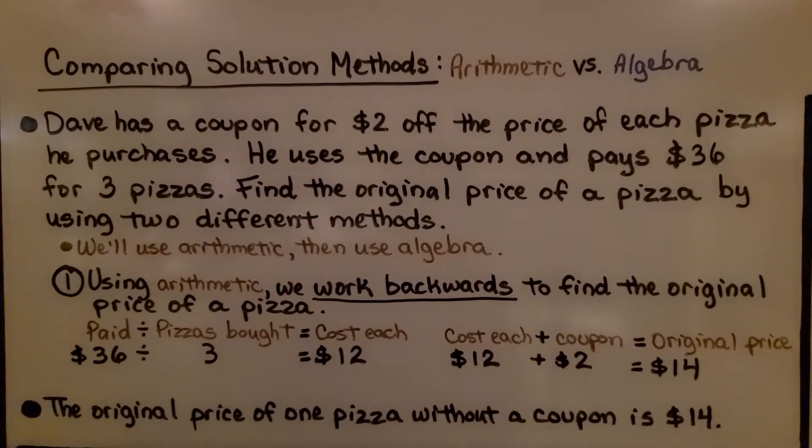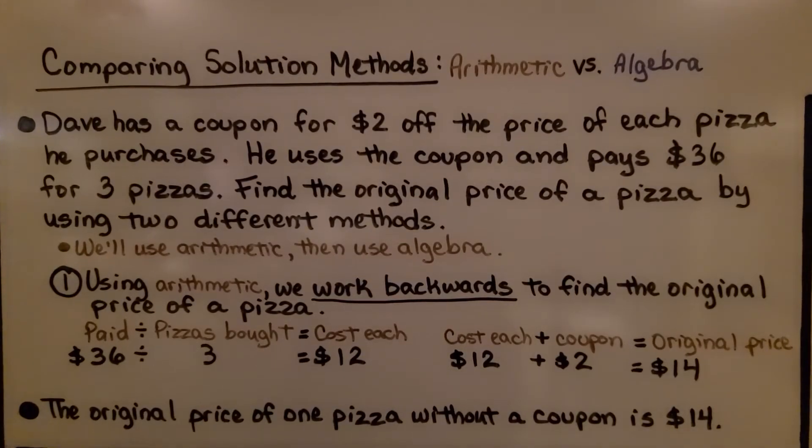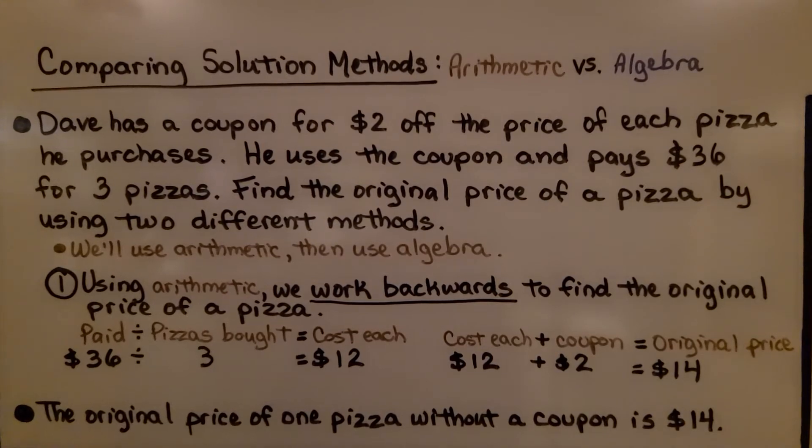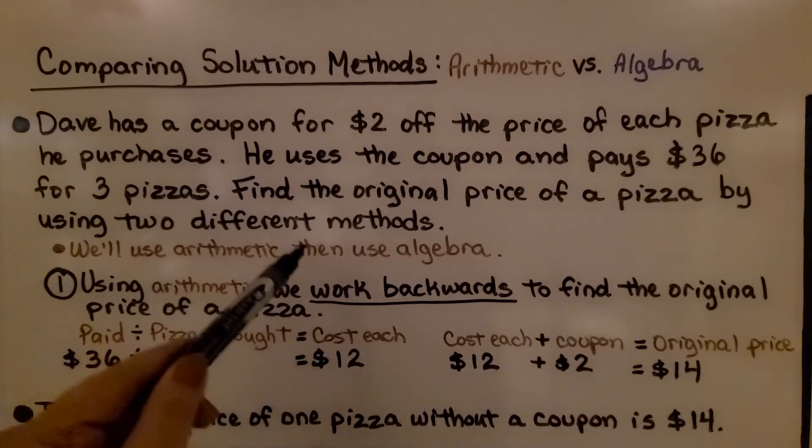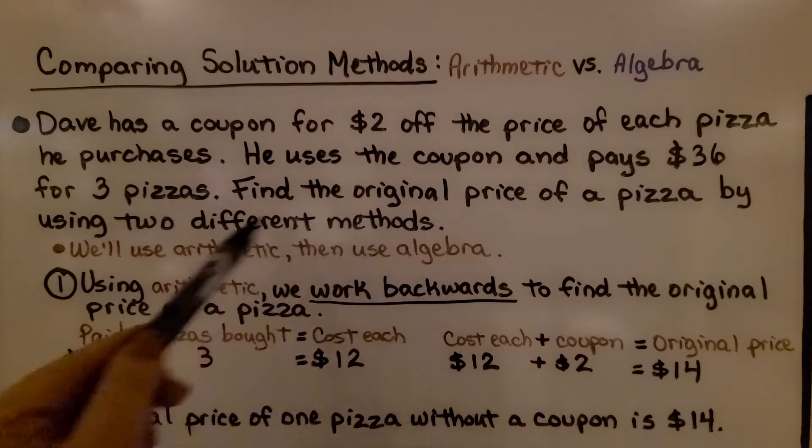So let's try comparing solution methods. Let's do arithmetic versus algebra. The problem says Dave has a coupon for $2 off the price of each pizza he purchases. He uses the coupon and pays $36 for 3 pizzas. Find the original price of a pizza by using 2 different methods. So we'll use arithmetic, then we'll use algebra.